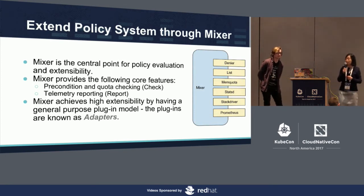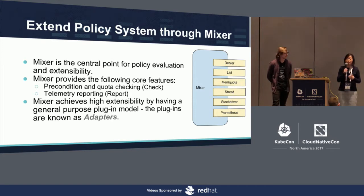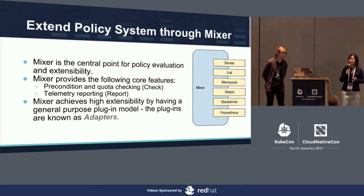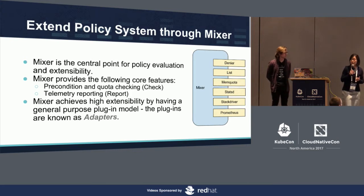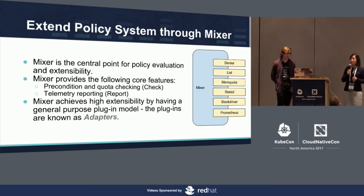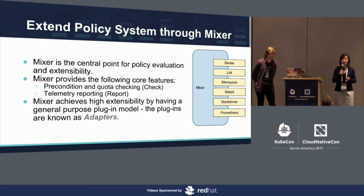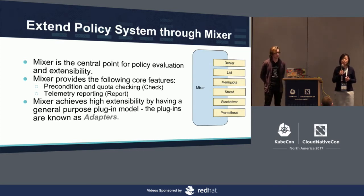Now we have a look at all the policies E-Steel provides. What if you want to support your own policy? It is pretty easy to do that through Mixer. Mixer is the central point for policy evaluation and it is designed for extensibility. Mixer exposes two APIs: check and report. Check allows you to do pre-condition check and quota check, and report allows you to do telemetry reporting such as logs and metrics.